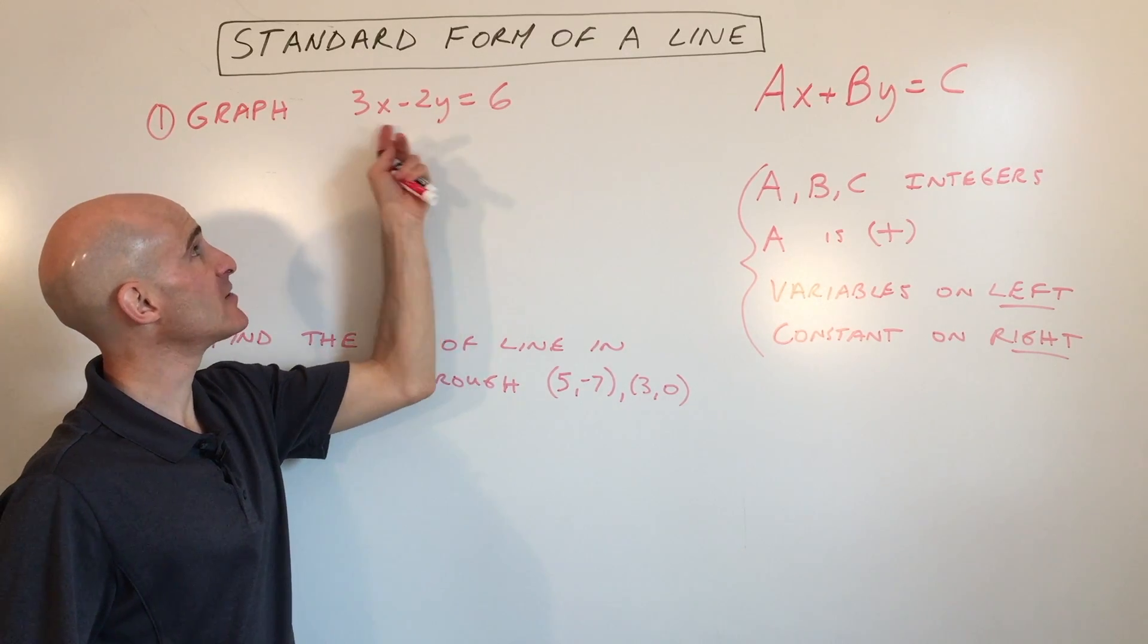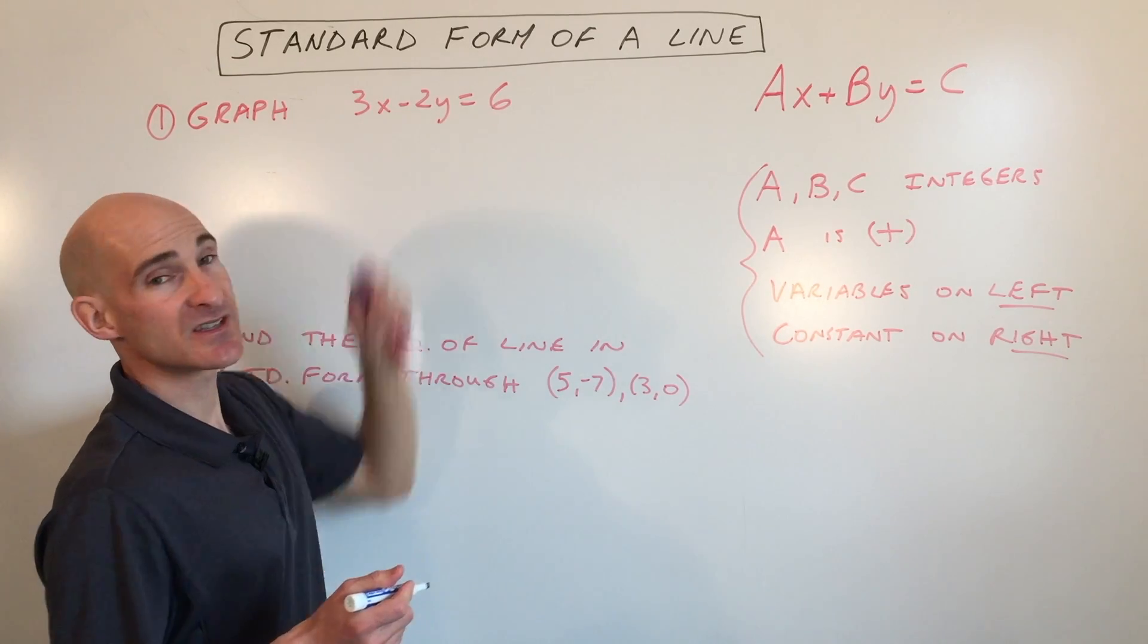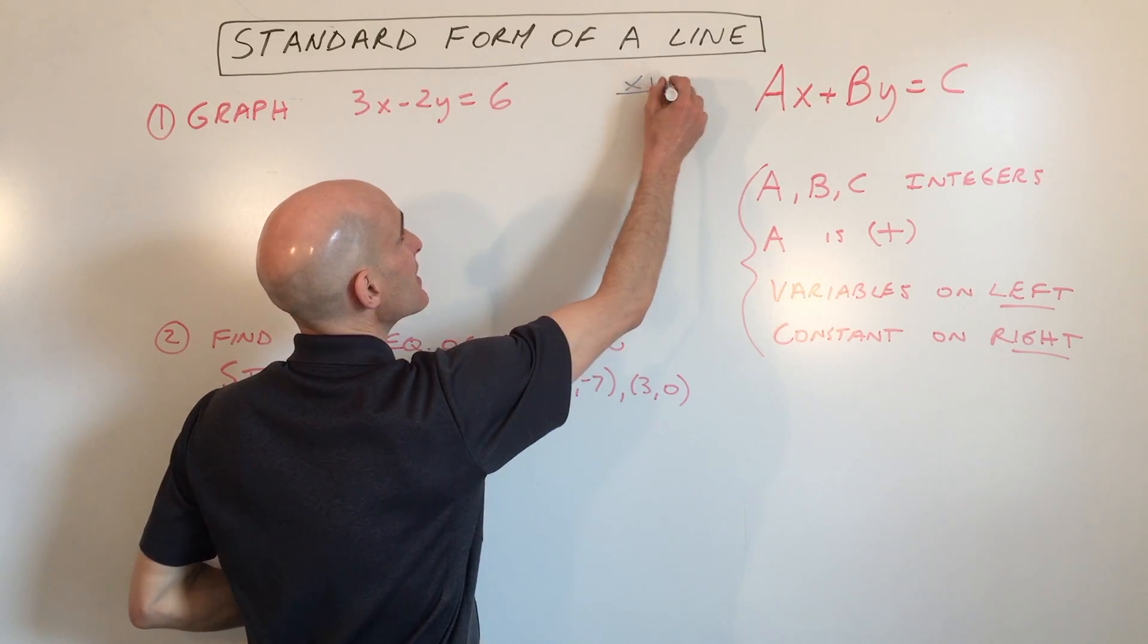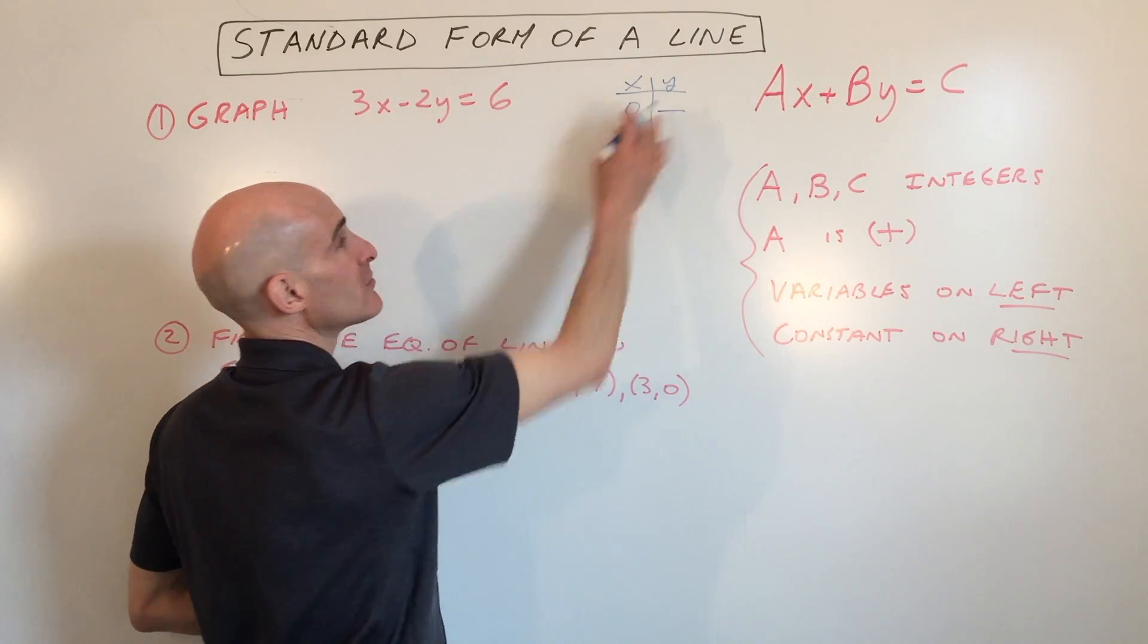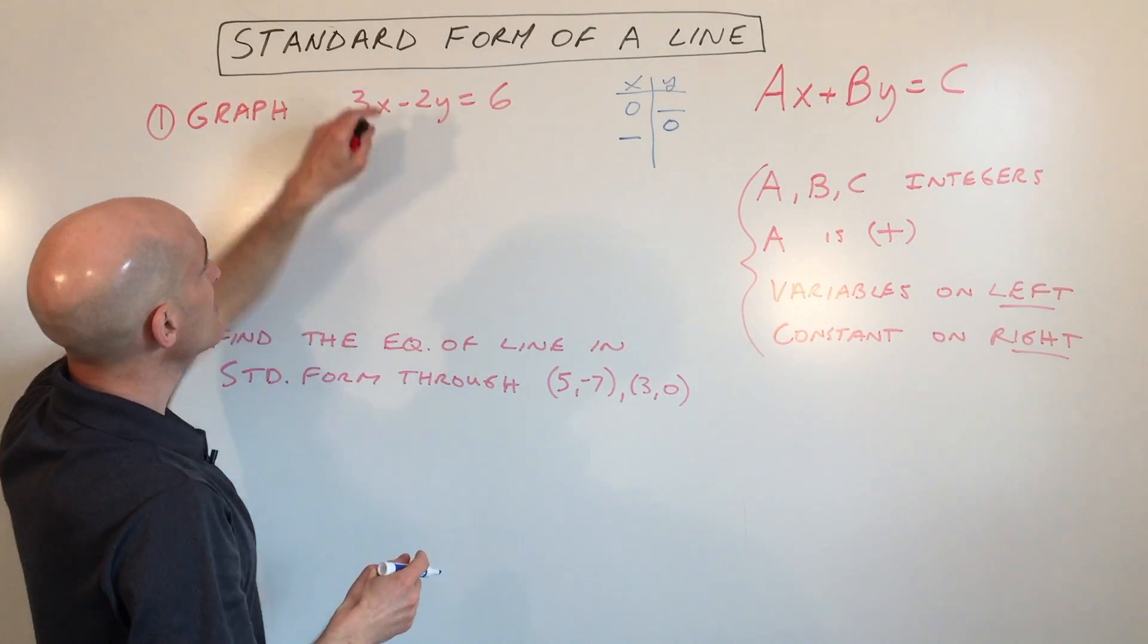Say you want to graph this line here: 3x minus 2y equals 6. The easiest way to graph the equation of a line when it's in standard form is to make a little table like this: set x to 0 to find the y-intercept and set y to 0 to find the x-intercept. So let's do that.